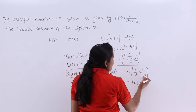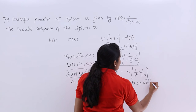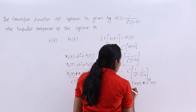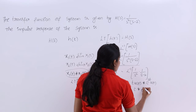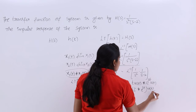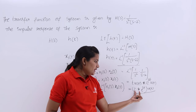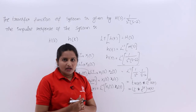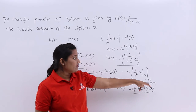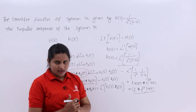Similarly, the inverse Laplace transform of 1/(s - 2) is e^(2t)·u(t). So finally, h(t) is equivalent to t·u(t) convolved with e^(2t)·u(t). Taking u(t) common, the final answer is t·u(t) * e^(2t)·u(t).